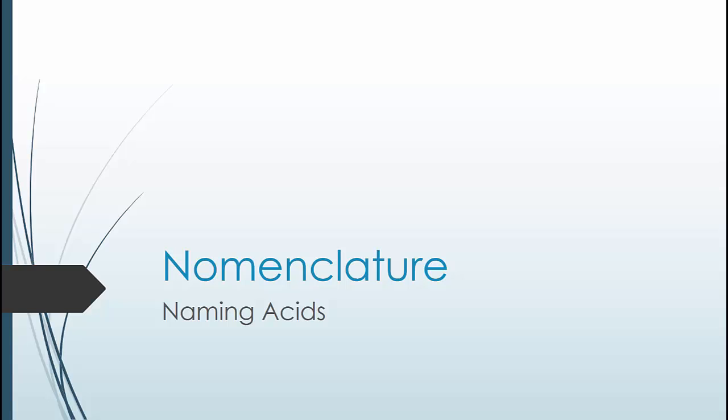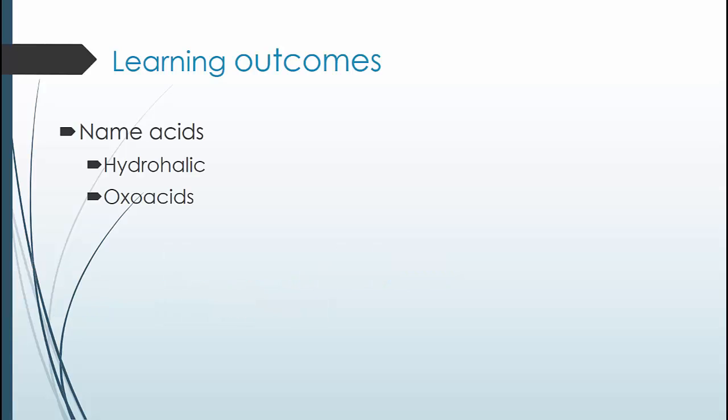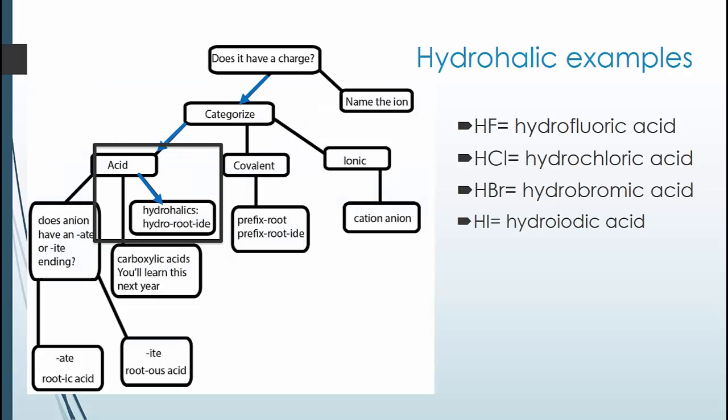In this video, we are going to discuss how to name acids. We're going to cover the naming of hydrohalic acids and oxoacids. For acids, we'll have several types: hydrohalics, oxoacids, and carboxylic acids. We're going to cover hydrohalics and oxoacids in this class. You'll talk a bit about carboxylic acids in later sections, especially in 1C, though the nomenclature doesn't typically get covered until organic chemistry.